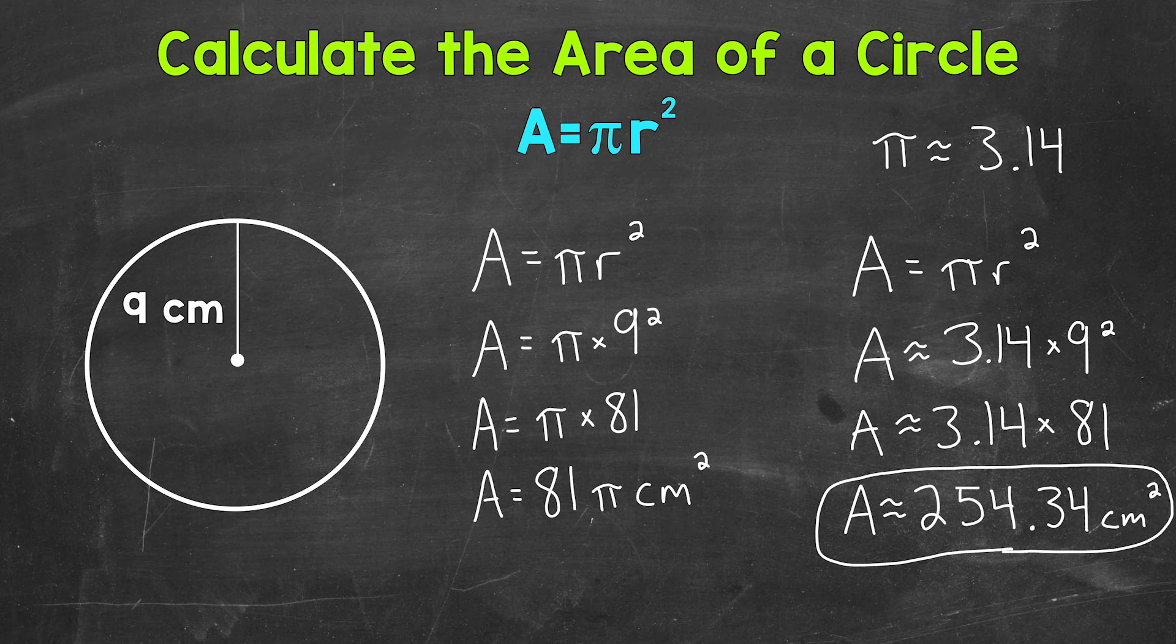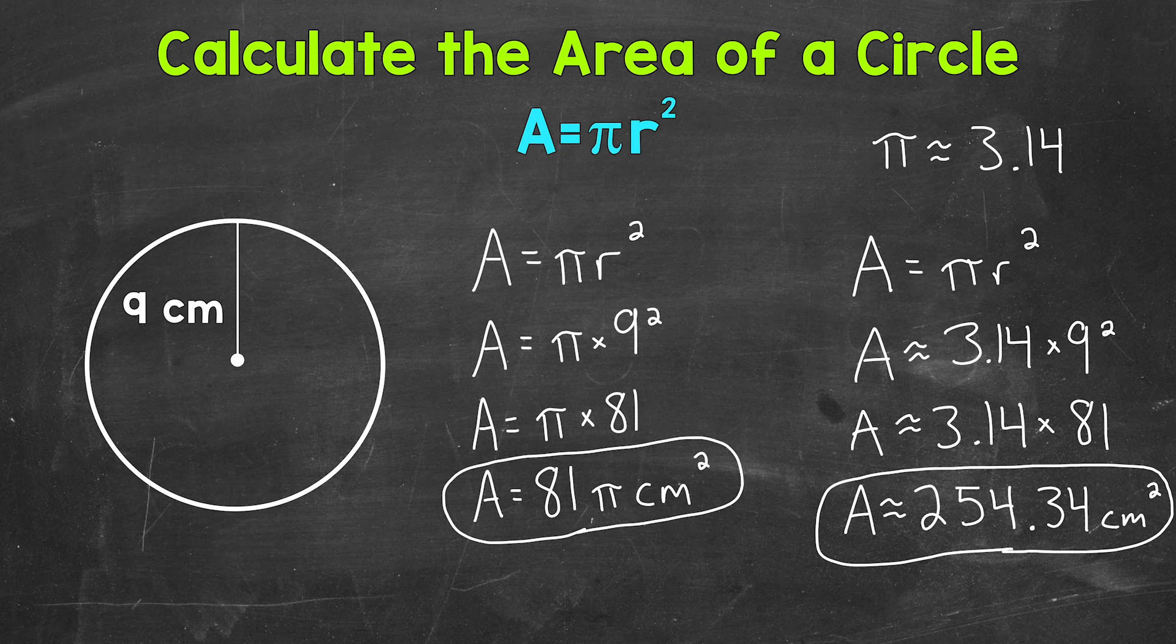And again, that's an approximate area because we used an approximate version of pi. So that gave us an approximate area there in decimal form in comparison to this area over here, which we wrote in terms of pi.